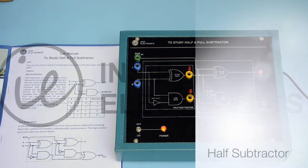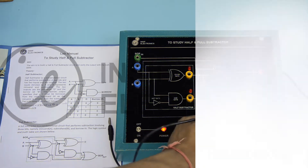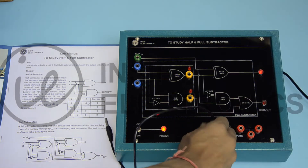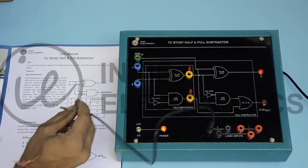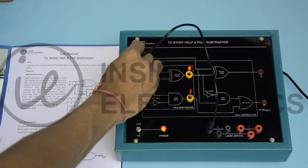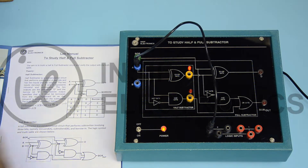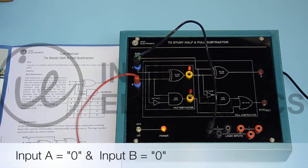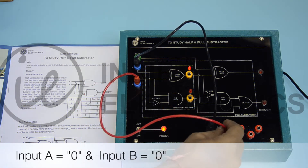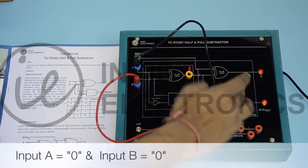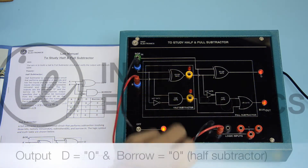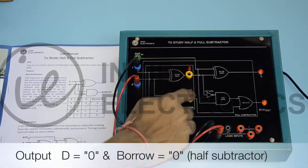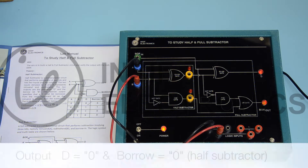Firstly, verify the truth table of the half subtractor. Connect A input to logic 0 and B input to logic 0, and see the output of the half subtractor. The output is 0, 0.